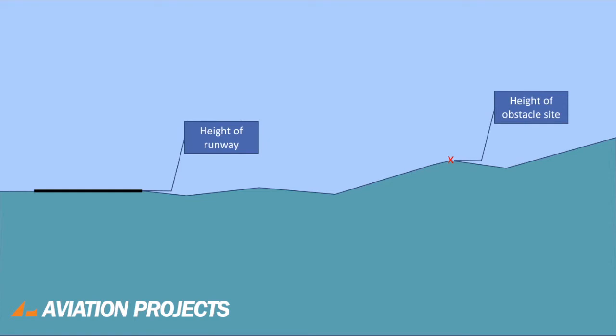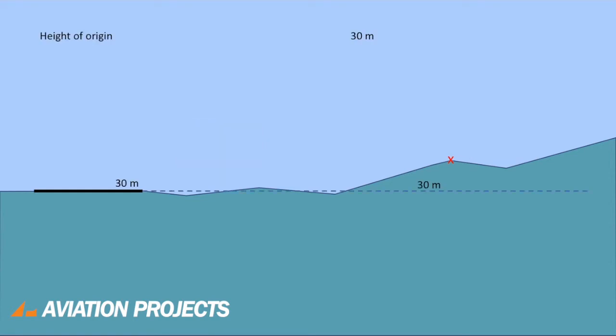In this example, the runway has an elevation of 30 metres above a nominal datum, and the site of a proposed obstacle is 35 metres at a distance of 400 metres.